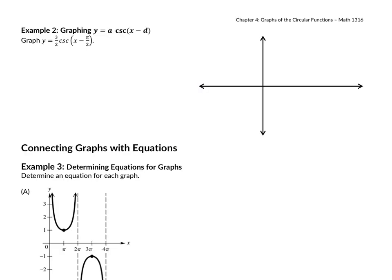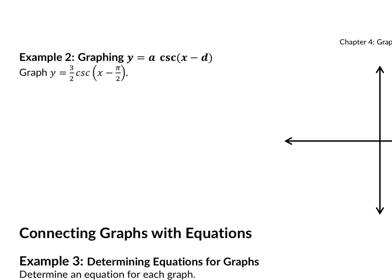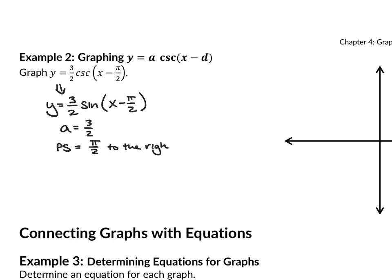For the next example, we'll graph (3/2) cosecant(x − pi/2). First, we graph its corresponding sine function: (3/2) sine(x − pi/2). The a value is 3/2, there's no change to the period since there's no coefficient in front of x, but there is a phase shift of pi over 2 to the right.